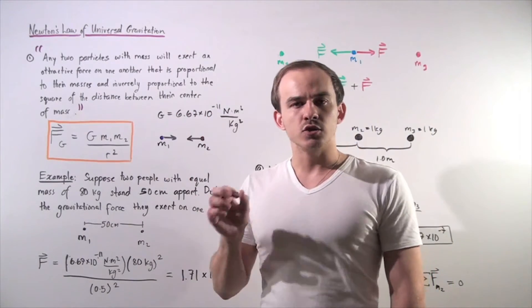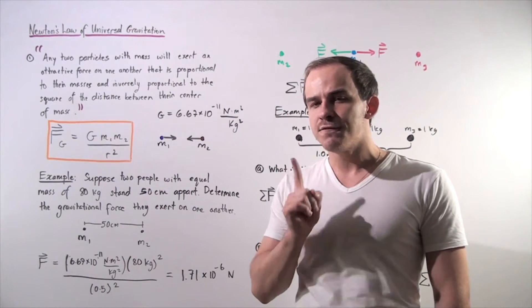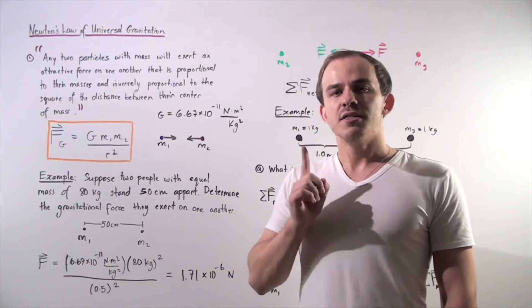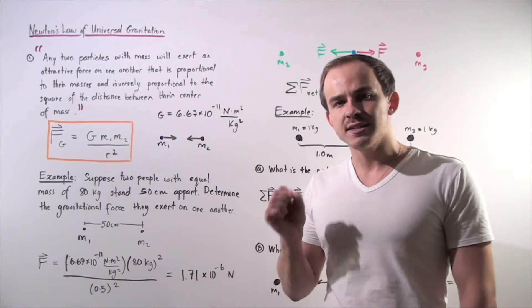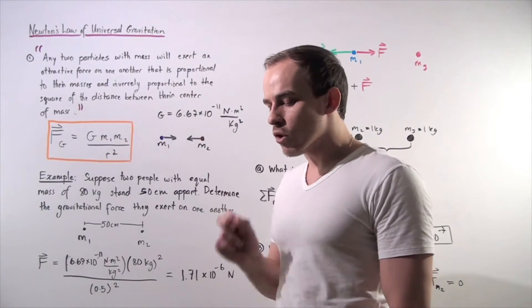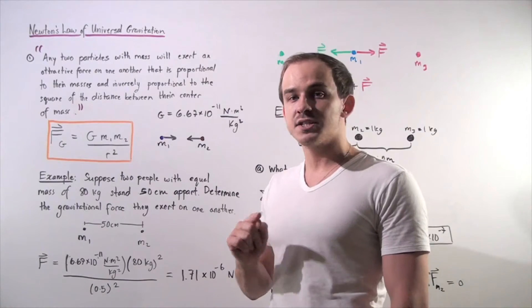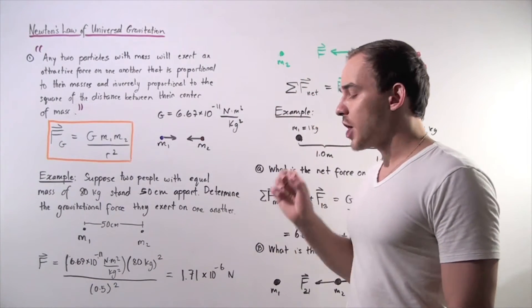Any two particles with mass will exert an attractive force on one another that is proportional to the masses of these two objects and inversely proportional to the square of the distance between their center of mass.